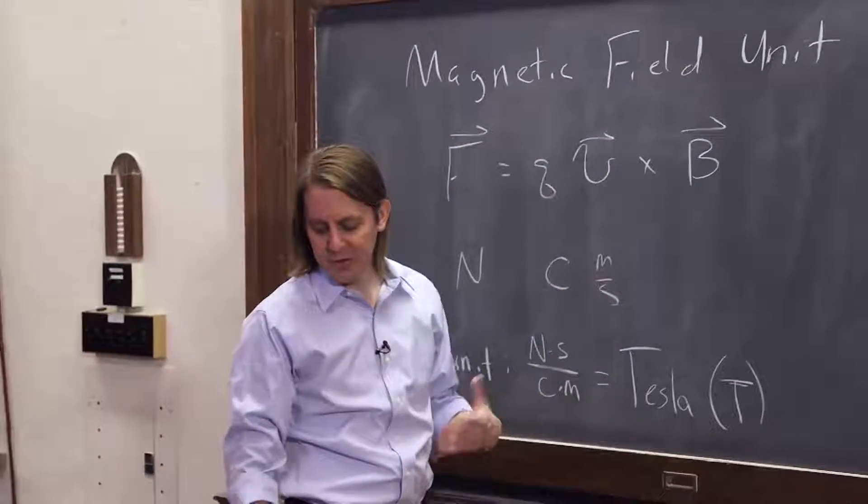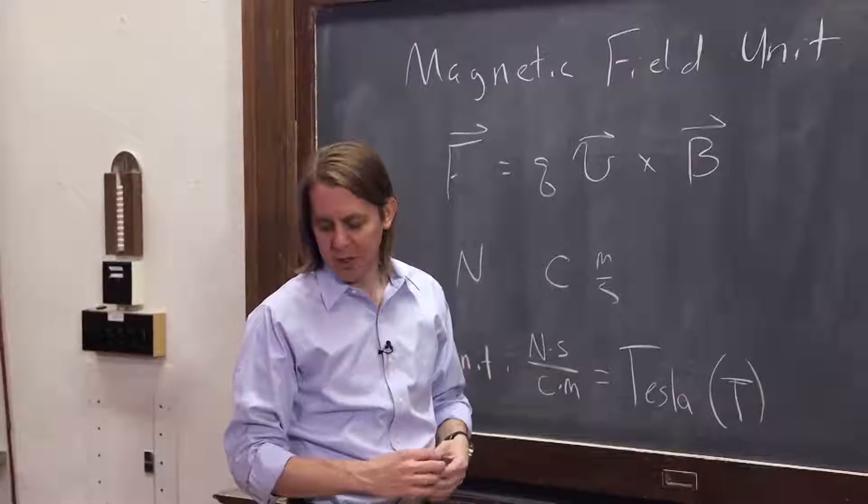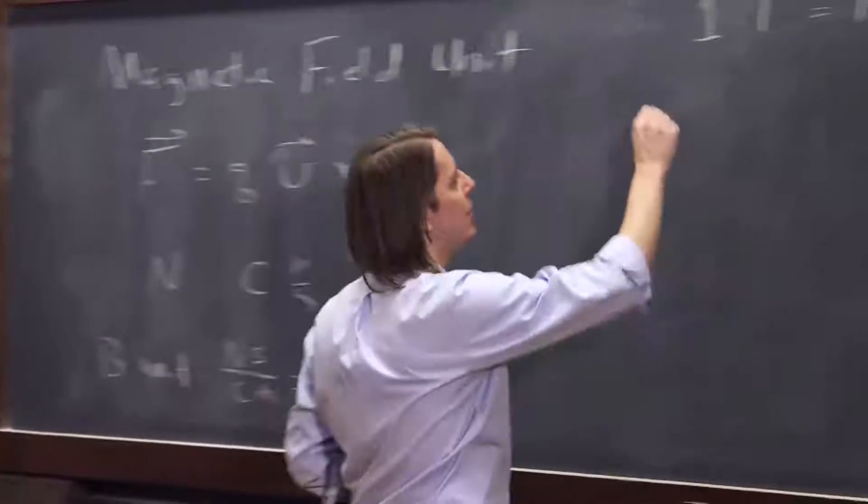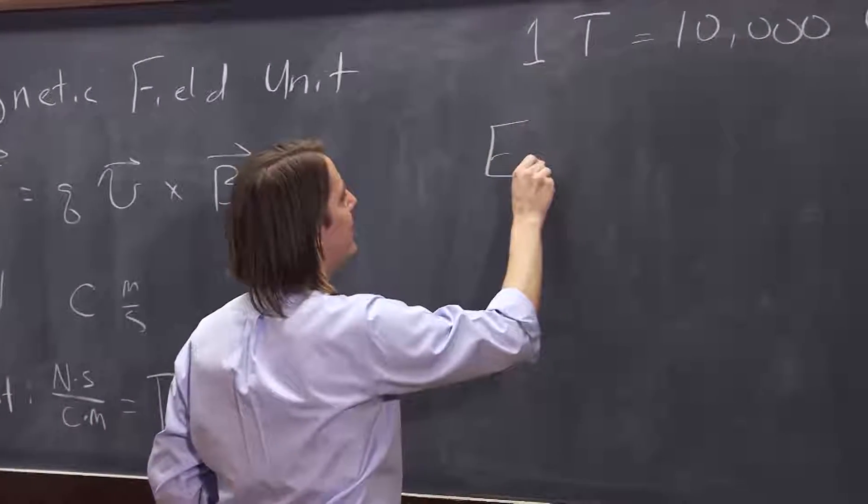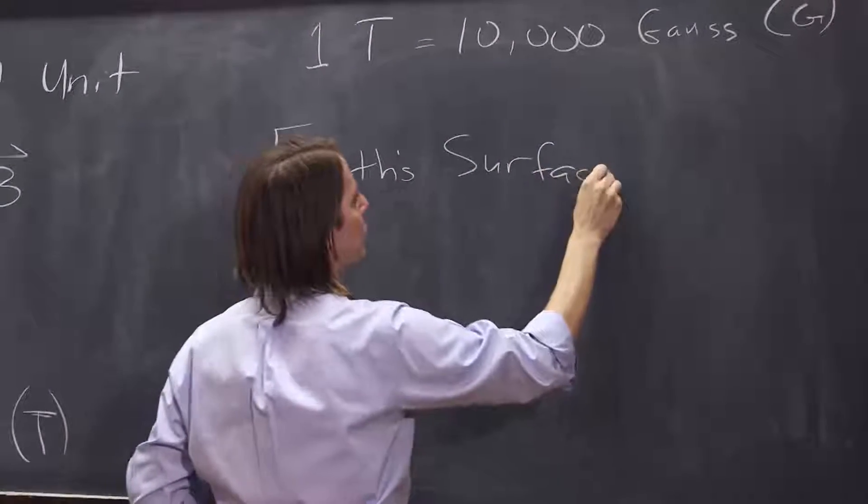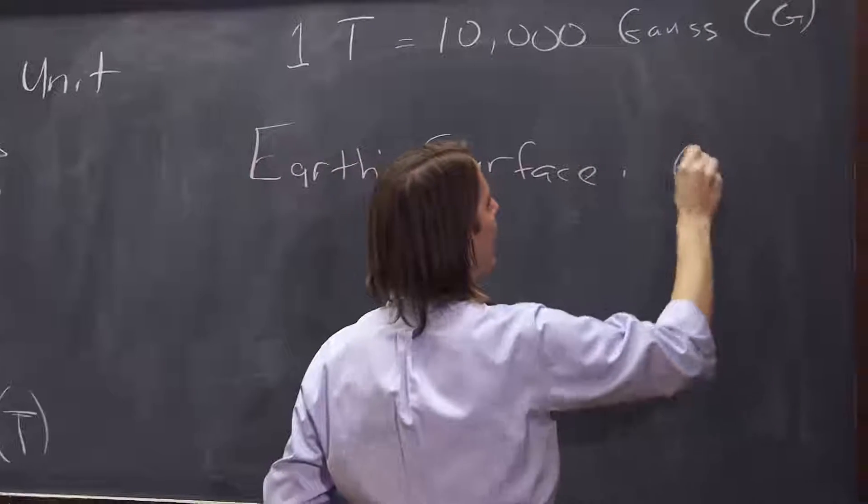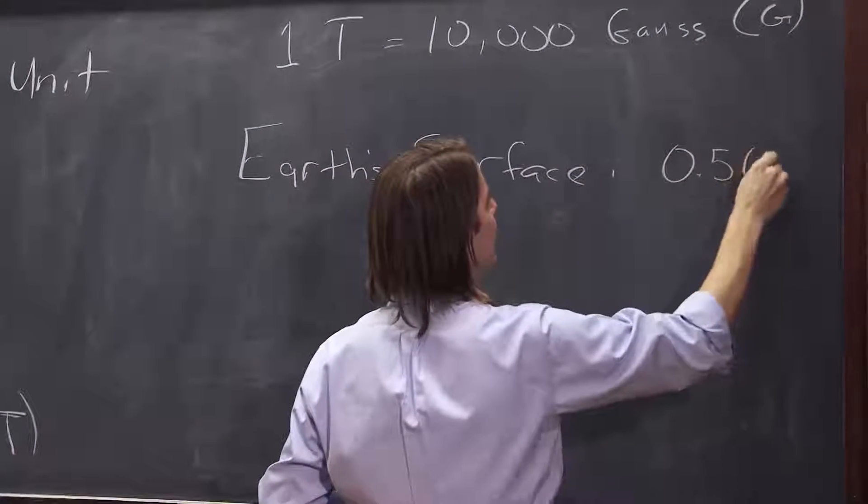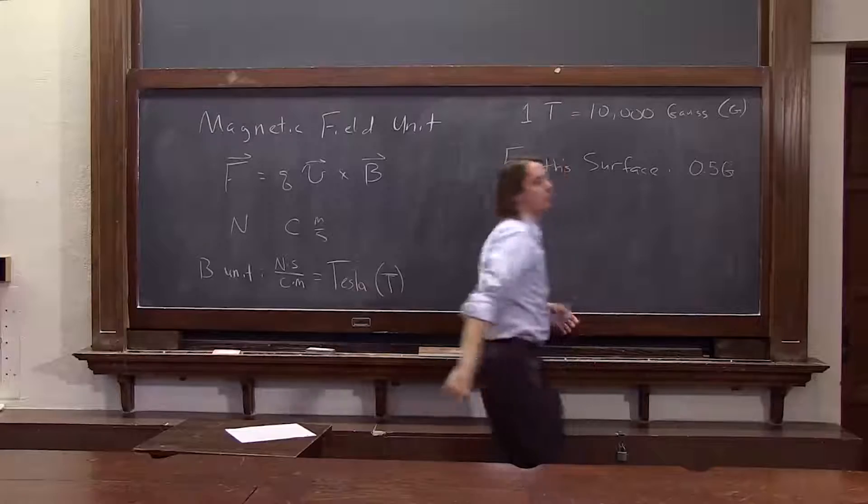So let's look at a few fields, just to give you some order of magnitude before we think about some problems. We know that there's a magnetic field at the Earth's surface. That's why magnets work. And it's about a half a Gauss, depending on where you are on the Earth's surface.